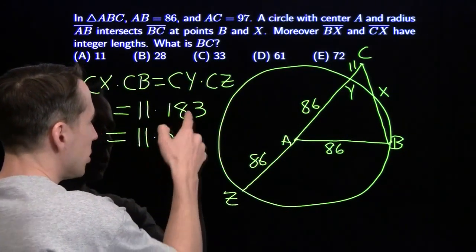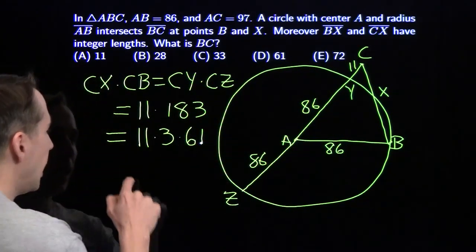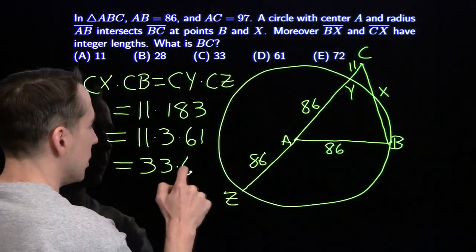We'll go ahead and write the prime factorization of this. It's clearly divisible by 3. It's 3 times 61. And now we see that we can write this as just 33 times 61.